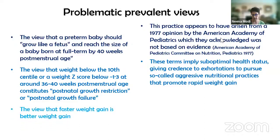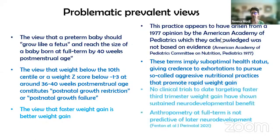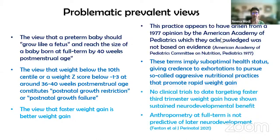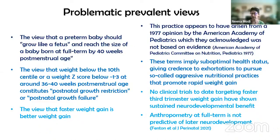There is also the view that faster weight gain is always better weight gain. As neonatologists, we know this is just not true. A breastfed full-term baby grows more slowly than a formula-fed baby — we're not saying formula feeding is better. Furthermore, there has not been a single clinical trial that has deliberately targeted more rapid third trimester weight gain and shown a sustained benefit for neurodevelopment. Tanis Fenton and colleagues just last year published a paper showing that anthropometry at full term in preterm babies is not predictive of later neurodevelopmental outcome.